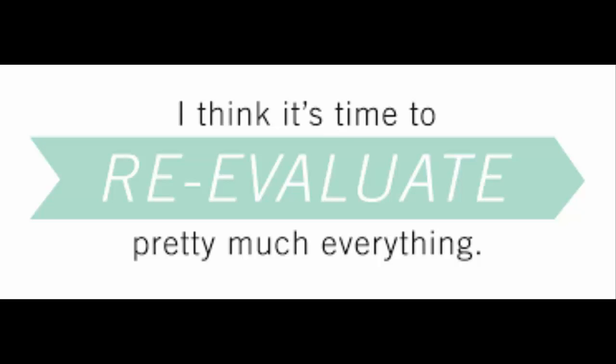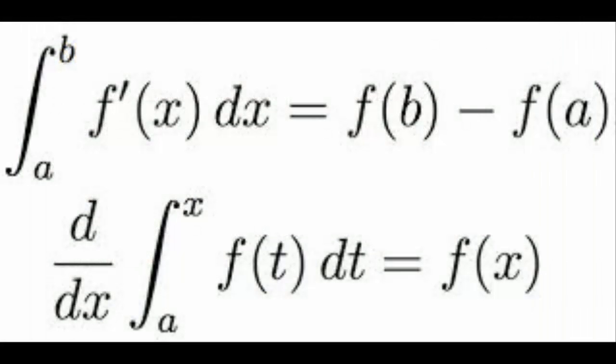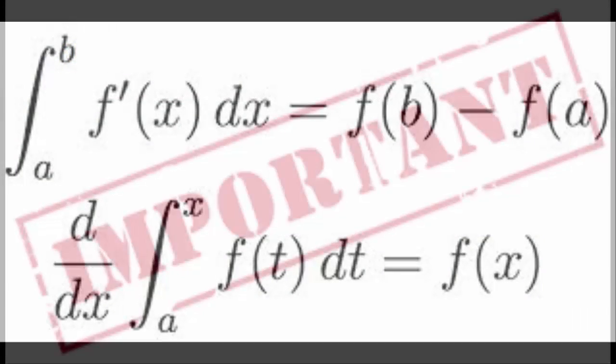Once we think we've got you done, we have you back for what's called supportive periodontal therapy. Some offices incorrectly call it a 'tissue check,' which implies it's a five-minute look around. This truly is a visit that should be about 45 minutes long, because we're going to probe again, evaluate the tissue health, and retreat areas that didn't respond initially or where we find any calculus or tartar buildup that we missed.